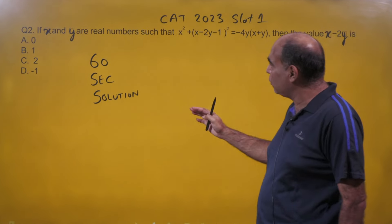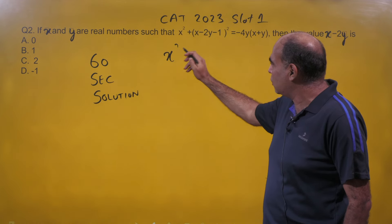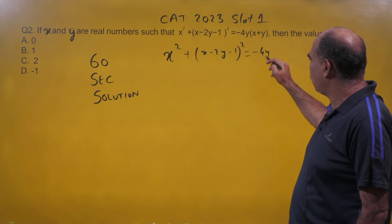Hi guys, welcome back to the one minute solution series. We are continuing the 60 second solution for CAT 2023 slot 1 algebra. The question from the toughest CAT papers is: x² + (x - 2y - 1)² = -4yx + y, and they're asking us to find the value of x - 2y.